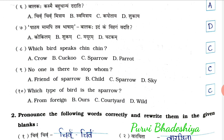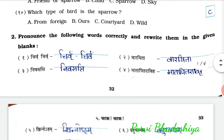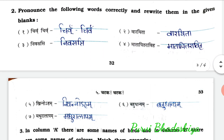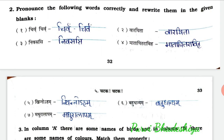Question number 2: pronounce the following words correctly and rewrite them in the given blanks. As you can see here, you have to copy down the same words as above. 1st: Chiu Chiu. 2nd: Varita. 3rd: Nivasasi. 4th: Matapitravih. 5th: Khinodham. 6th: Bahudhaniam. 7th: Madhuralapam.